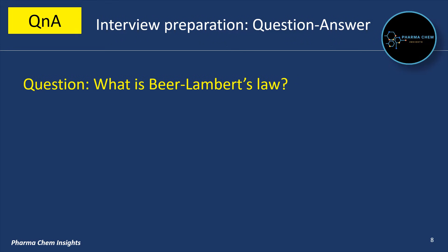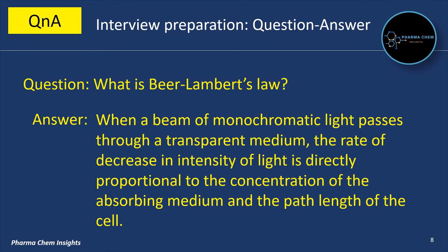What is Beer-Lambert's law? Beer-Lambert's law states that when a beam of monochromatic light passes through a transparent medium, the rate of decrease in intensity of light is directly proportional to the concentration of the absorbing medium and the path length of the cell.